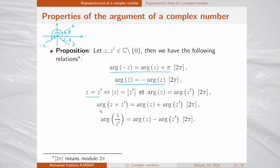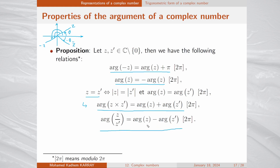These three properties are obvious from geometric considerations. The fourth property is more difficult to see but very useful: the argument of the product of two complex numbers equals the sum of their arguments. Similarly, the argument of the ratio of two complex numbers equals the difference of their arguments.